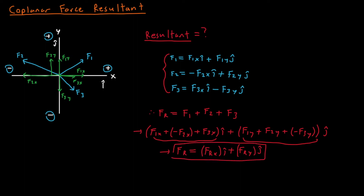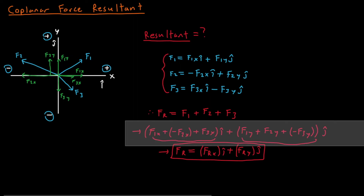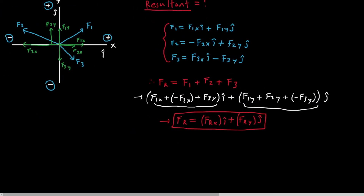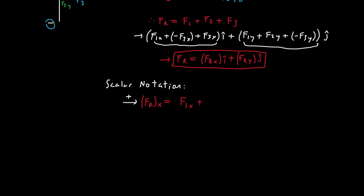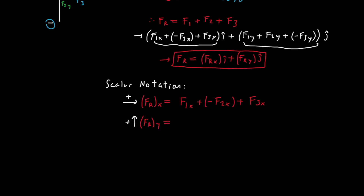That is the resultant of the coplanar forces in vector notation. In scalar notation, summing forces in x (taking right as positive): FRx = F1x - F2x + F3x. Summing forces in y (taking up as positive): FRy = F1y + F2y - F3y. These are essentially the same results as the i and j components.